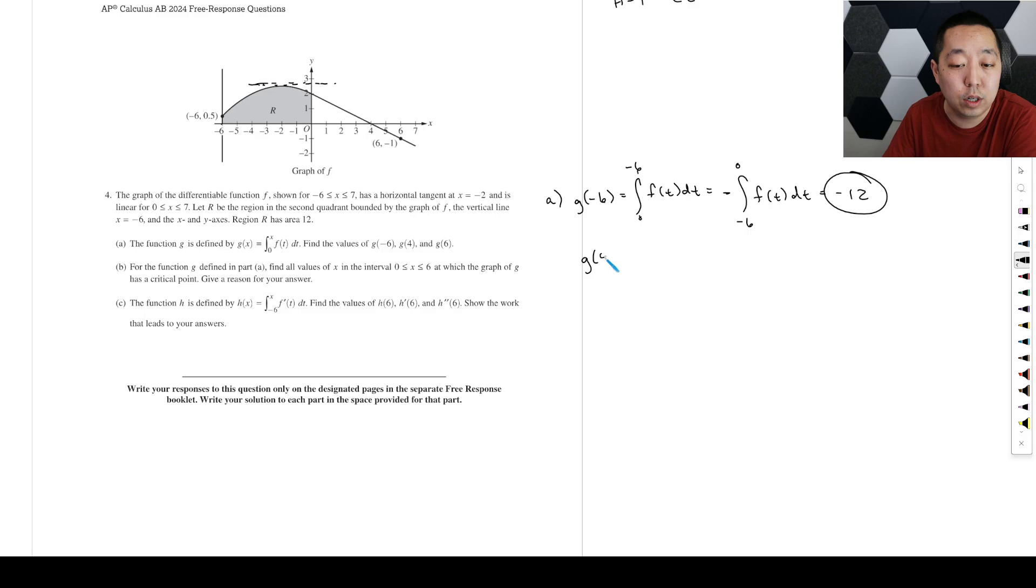Then G of four is going to be the integral, plugging into here, zero to four of F of T dt. So that's going to be the area from zero to four. They said it's a straight line. So this is just simply a triangle right here. That's that area. So it's one half. The base is four. And the height looks like two. So that's going to be two times two, which is four.